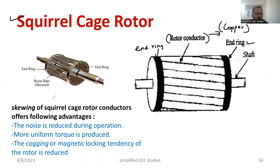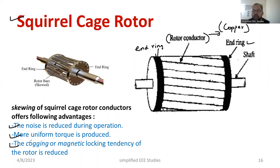Why skewing? Because it ensures noiseless operation and makes sure that the torque produced in the motor is uniform. Moreover, magnetic locking — also known as cogging — is prevented. If the stator and rotor slots are aligned with each other, the motor locks and will not move further. To prevent this, the bars are arranged in a skewed shape.